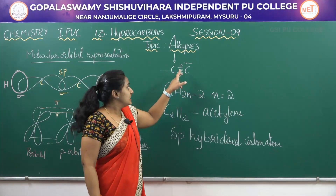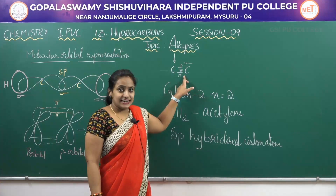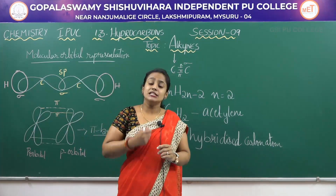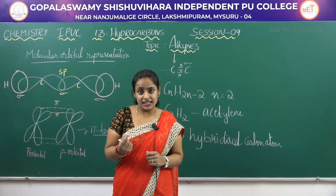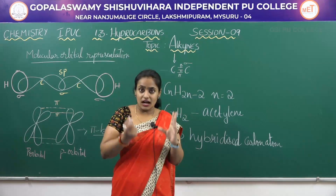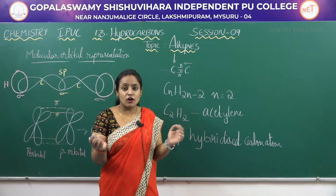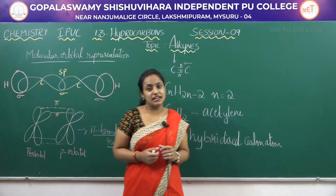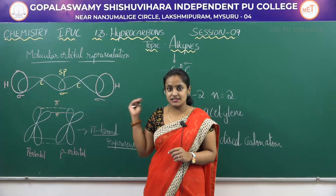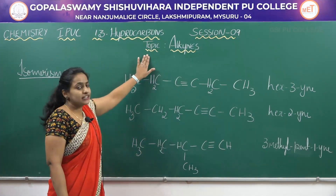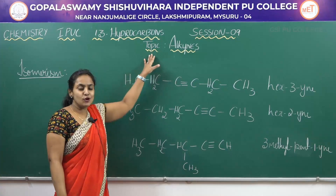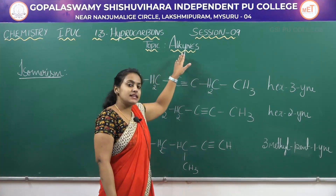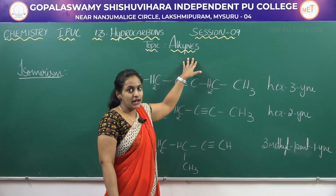The alkyne contains a triple bond. Therefore these bonds are usually stronger than in alkenes and alkanes, due to the shorter bond length. This is a brief introduction of alkynes. Now let us consider the isomerism of alkynes — which types of isomerism are exhibited by alkynes?